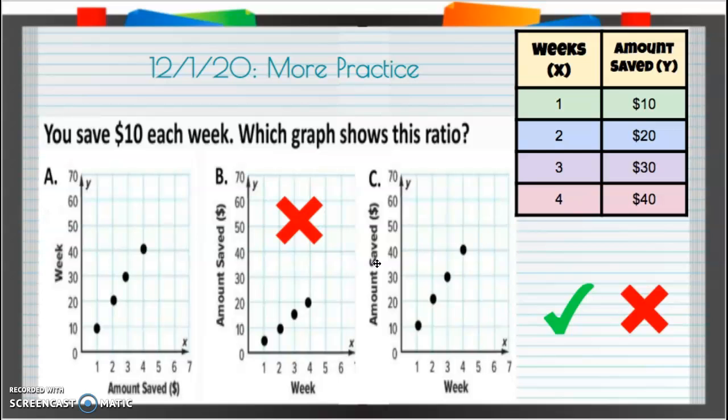When we used our points here, our weeks was the X axis. So the X axis, remember, is going side to side. So weeks should be on the bottom. This is amount saved, not that. Amount saved, I'm going to cross off those points because those are wrong.